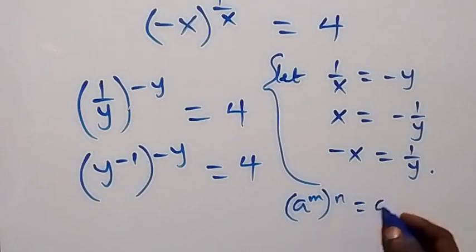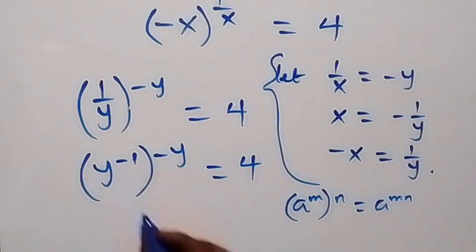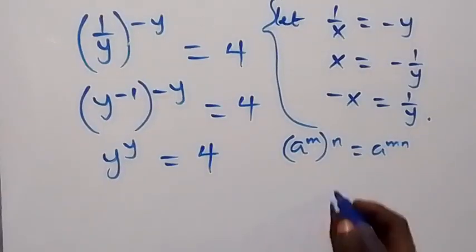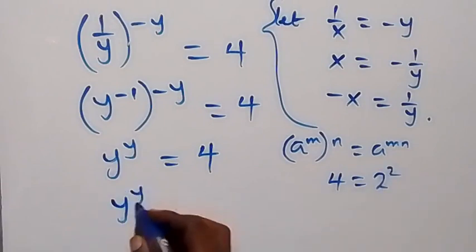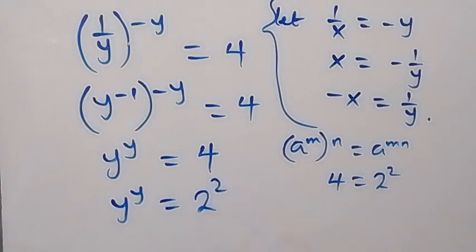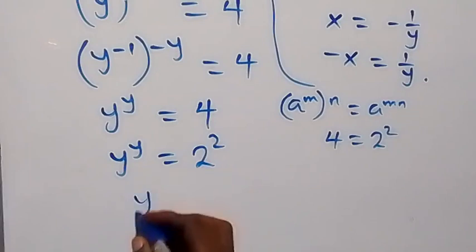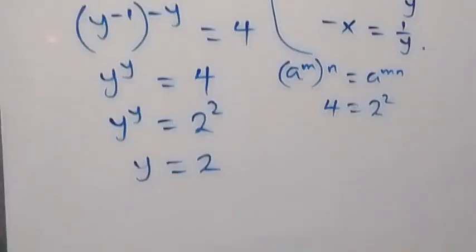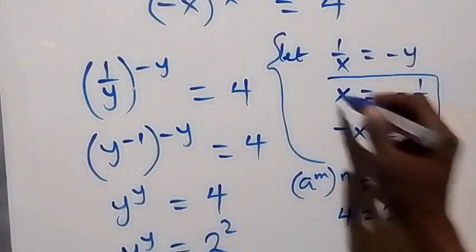Multiplying the exponents — minus 1 times minus y equals positive y — we get y raised to power y equals 4. We can write 4 as 2 squared, so y^y equals 2². Comparing both sides, we can conclude that y equals 2. Recalling that x equals minus one over y, we get x equals minus one over 2.